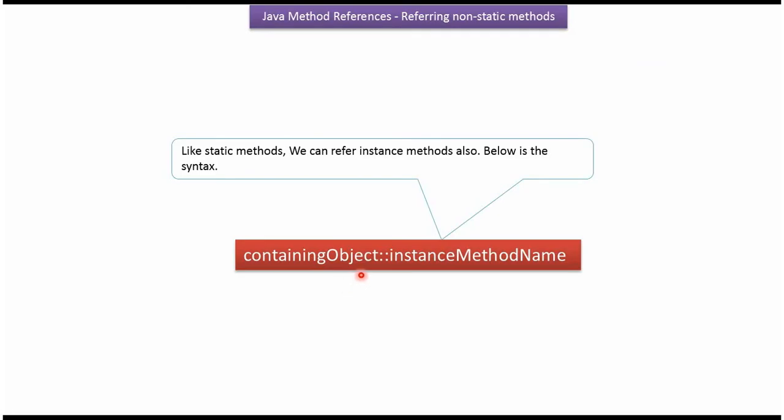Here you can see the syntax to refer non-static method: containing object double colon then instance method name.